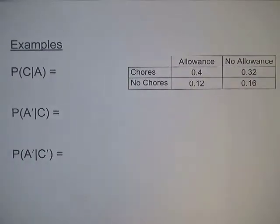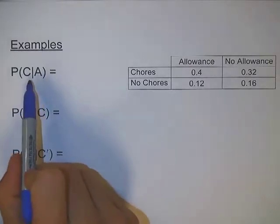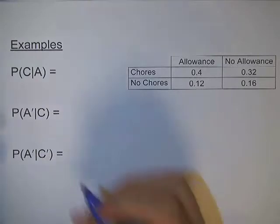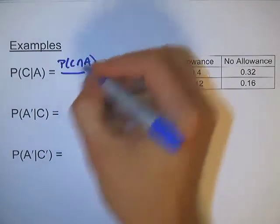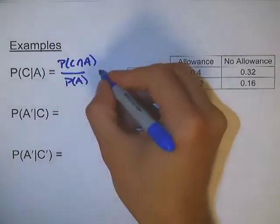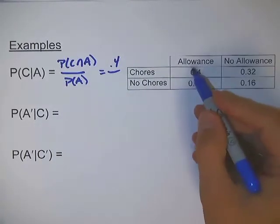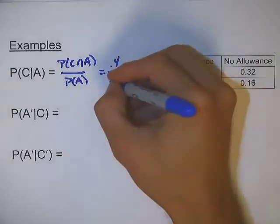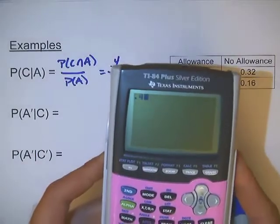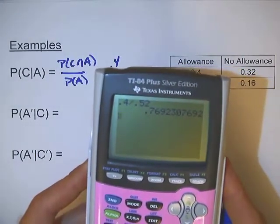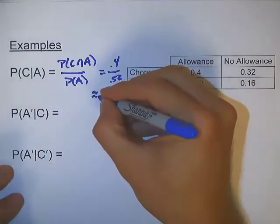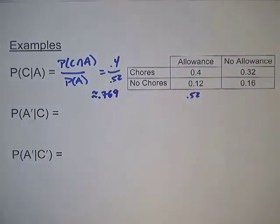Let's do a couple more conditional probability examples. Now it's chores given an allowance: P(C | A). If we know the student gets an allowance, what's the probability they also do chores? Using the formula, this is P(C and A) divided by P(A), which is 0.4 divided by 0.52, equal to about 0.769. So there's almost a 77% chance of somebody doing chores if they get an allowance.